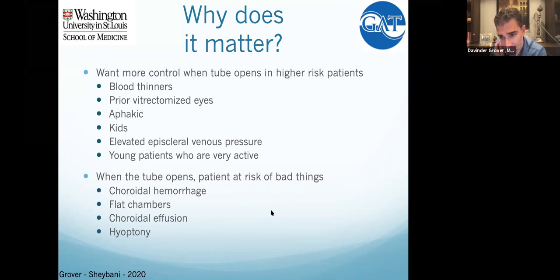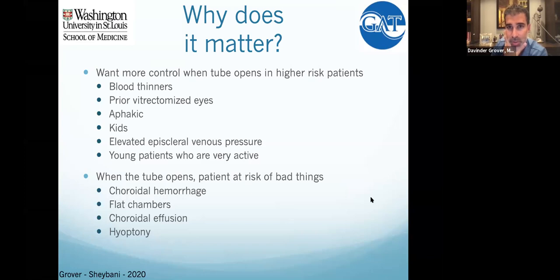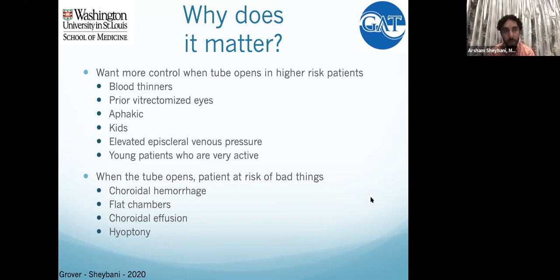Another question about squinting after implants and double vision — without question, the biggest hesitation I have about tube shunts is the risk of diplopia. You give a patient double vision no matter what age and they're miserable. I do think implants that don't involve muscle manipulation — single-quadrant implants like the Molteno — are at lower risk of causing double vision, though I don't think we have hard data on this yet.